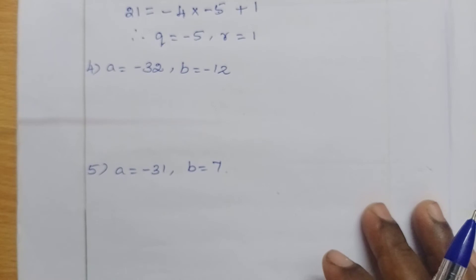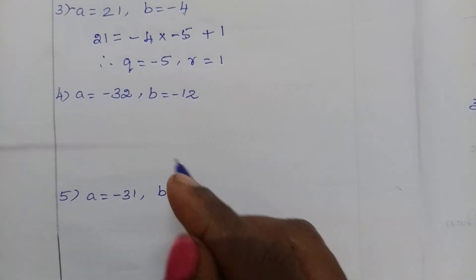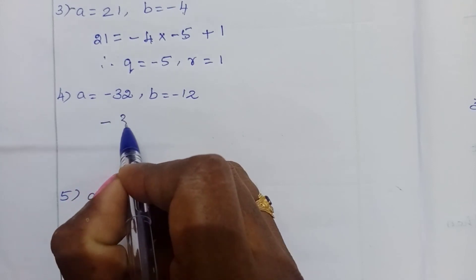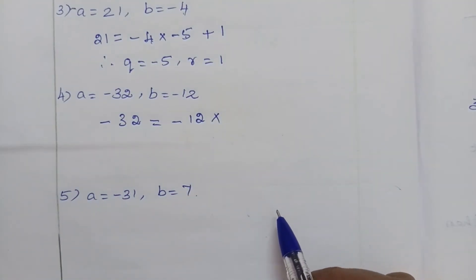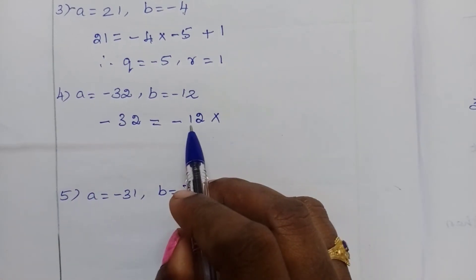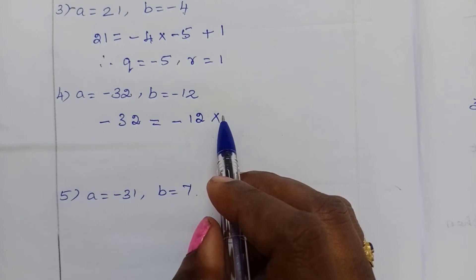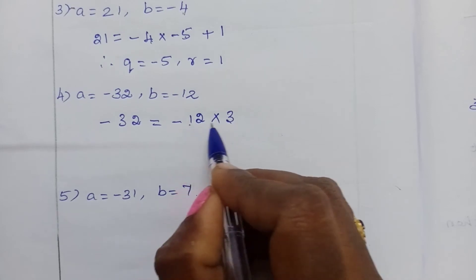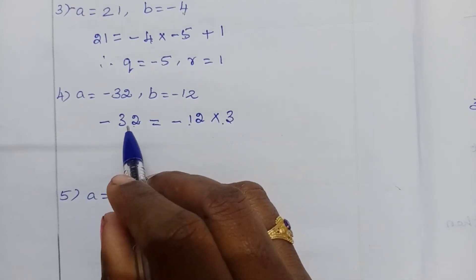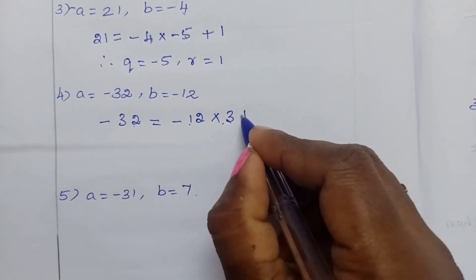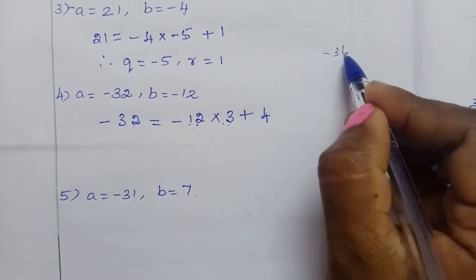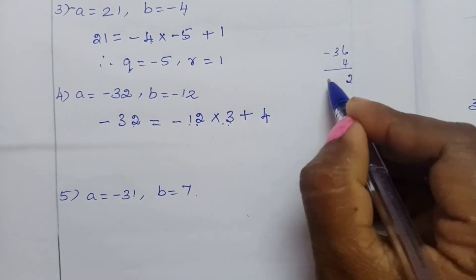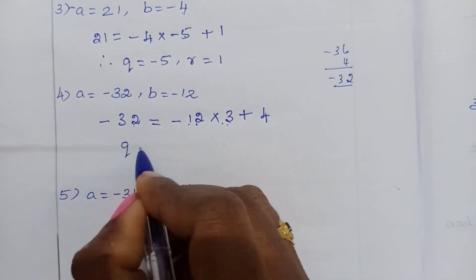Now see the next problem, A equal to minus 32, B equal to minus 12. So minus 32 equal to minus 12 into, here A value is negative. So if you put negative here, it becomes positive. So the quotient we have to put positive number. See if you put 3, what you will get: 3, 12's are 36, but here what is that, 32 is there. So how much you have to reduce, 4. So plus 4, now multiply minus 12 into 3, minus 36. Minus 36 plus 4, difference and integers are subtract. So minus 32 answer we will get. So therefore quotient is equal to 3, reminder is equal to 4.